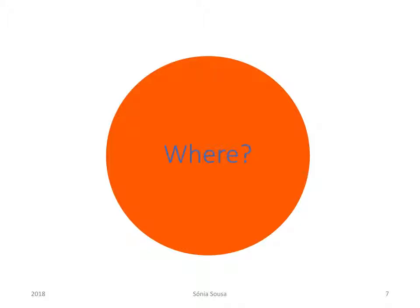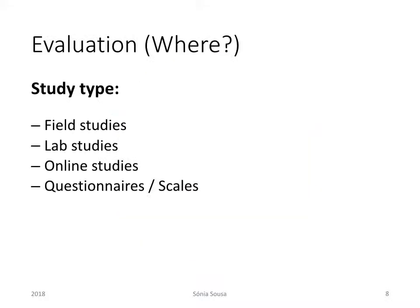How can the evaluation process be done? It can be done in many places. It can be done in the field outside — these are called field studies. It can be done in constrained conditions, lab studies or online studies, or it can be done through questionnaires and scales.